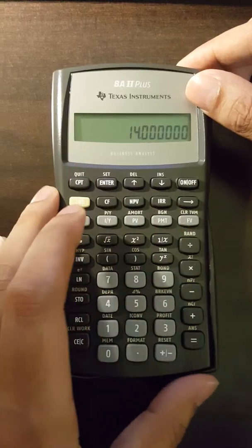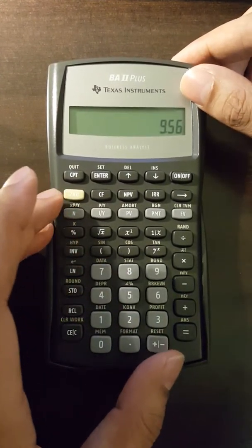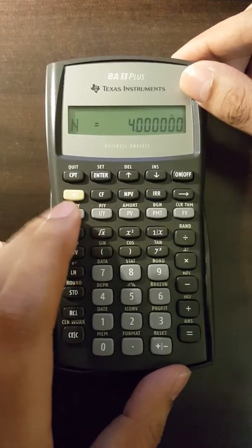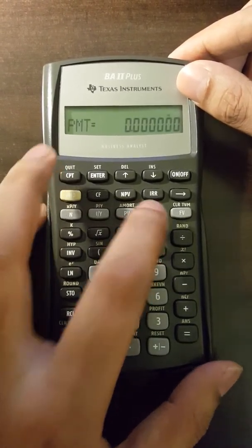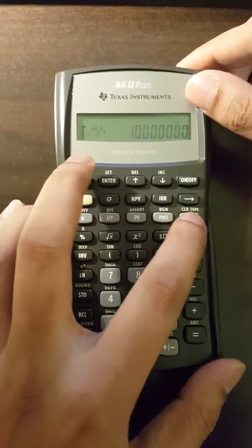So we'll clear the TVM registers again. The present value, if you remember was 9.56. So we enter that. N is 4. PMT is 0. I by Y is 10. And we compute future value.